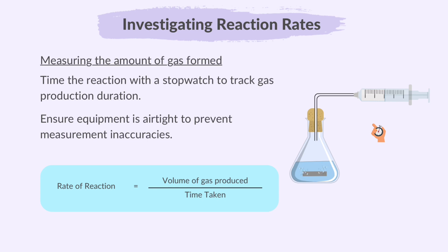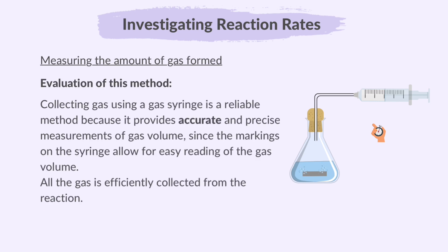For instance, divide the gas volume by the time taken to collect it to find the rate at that specific time. Collecting gas using a gas syringe is a reliable method because it provides accurate and precise measurements of gas volume, since the markings on the syringe allow for easy reading of the gas volume.